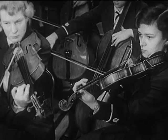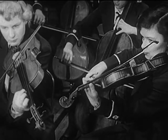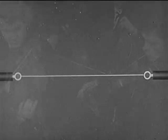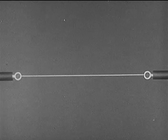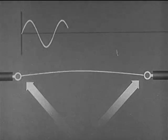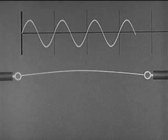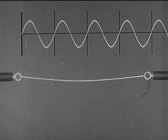Each vibrating string may be made to produce different tones. To explain some of the reasons for this, let us observe this string. Here, there is no motion at these endpoints or nodes. The string vibrates along its full length and produces its longest possible wavelength. This is the lowest or fundamental frequency of the string, sometimes called the first partial.